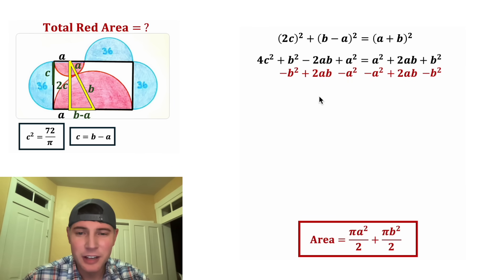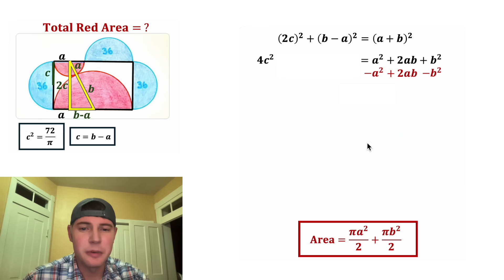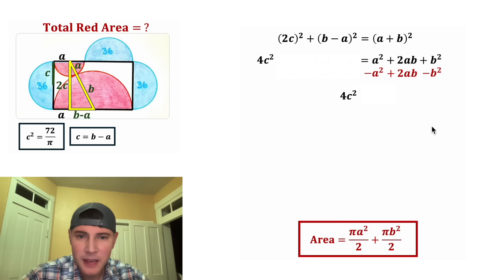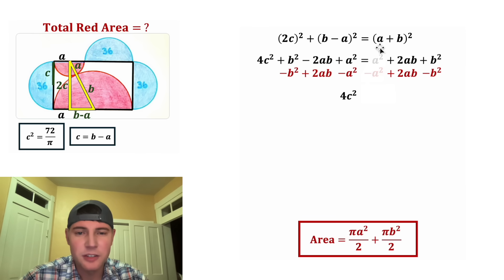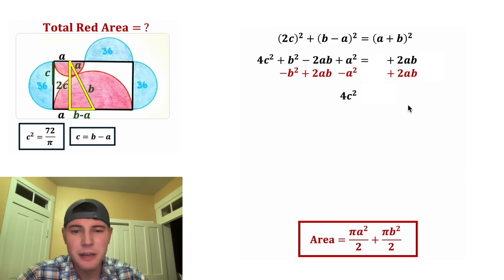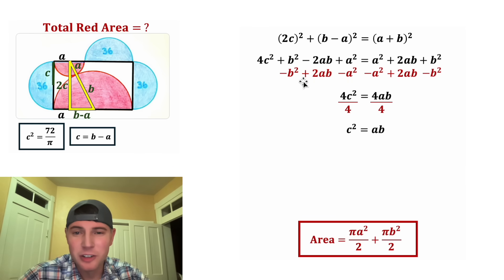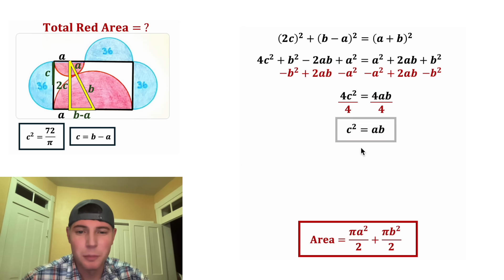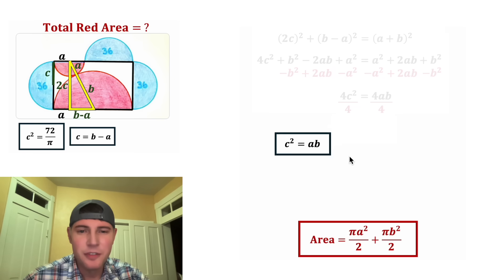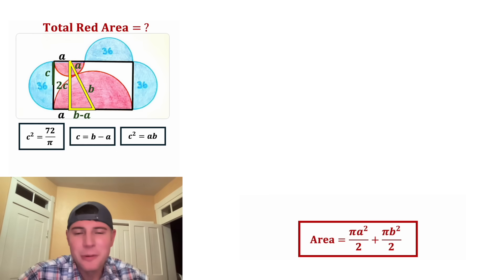Now let's get 4c² by itself — add 2ab to both sides. On the left everything cancels except 4c², and on the right −2ab + 2ab + 2ab = 4ab. So 4c² = 4ab. Dividing both sides by 4 gives c² = ab. Let's put a box around this and move it up here.